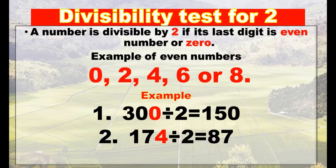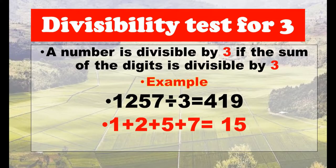Divisibility test for two: a number is divisible by two if its last digit is an even number or zero. Examples of even numbers are 2, 4, 6, 8, and 0. For example, 300 divided by 2 equals 150, and 174 divided by 2 equals 87. This shows that both these numbers are divisible by two.